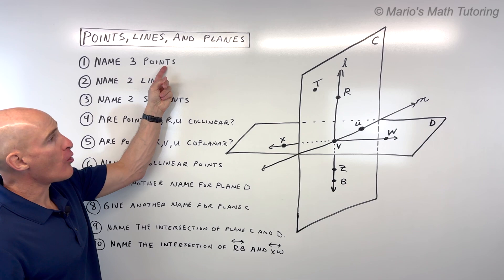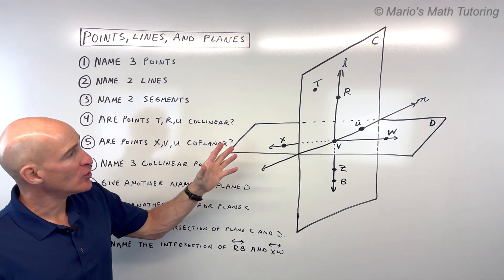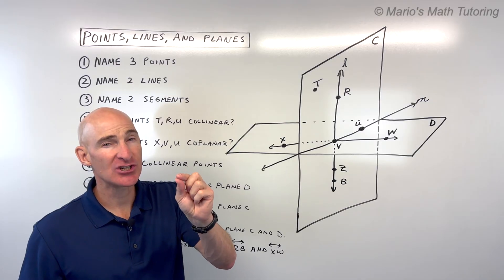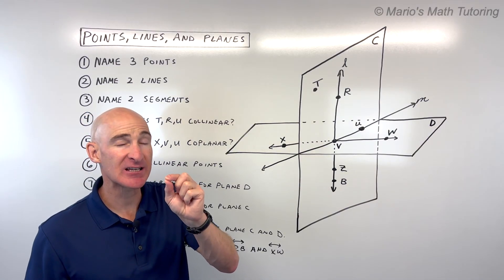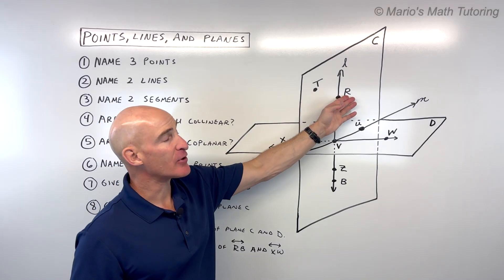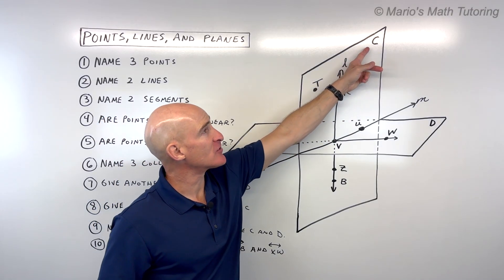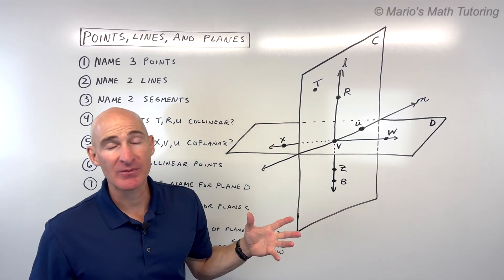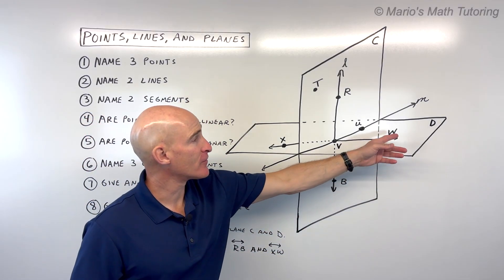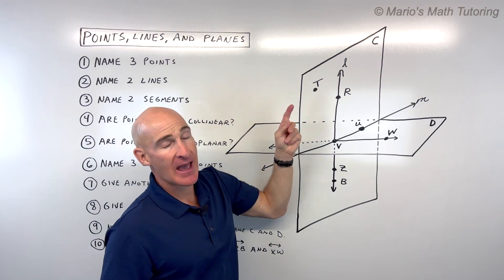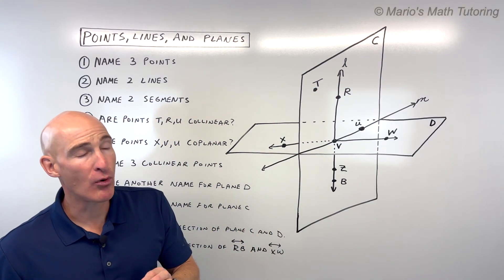Question one says name three points. When you look at this diagram, what is a point? A point is basically a location in space, and it's infinitesimally small, but it's represented by one of these capital letters. If you see a dot and a capital letter next to it, that's referring to a point.